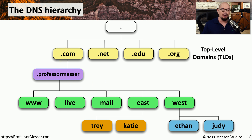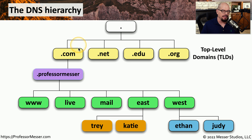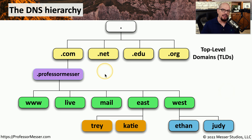And on very large networks, you might have organizational domain names. For example, east.professormesser.com and west.professormesser.com. In the east there may be certain servers; in the west there might be other servers. Having this hierarchy allows us to configure a very specific structure, and this works across every fully qualified domain name on the internet.